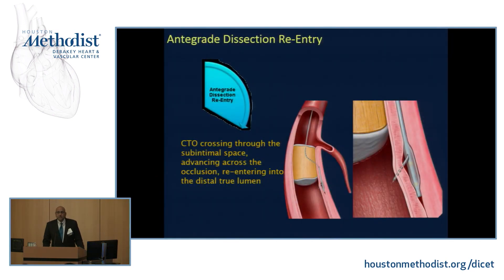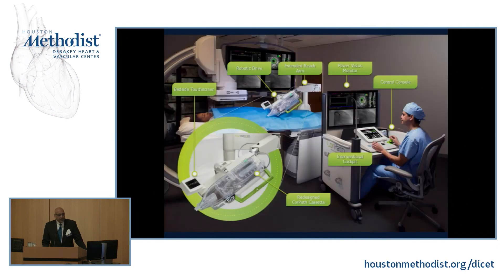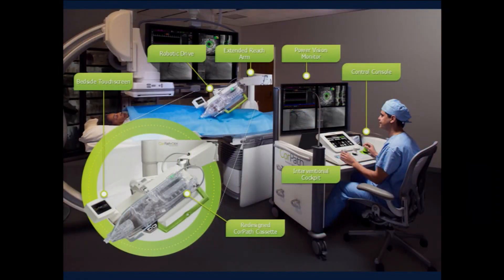For arteries that are completely blocked, we go into the vessel wall and re-enter beyond the total occlusion, push the atheroma out, and place a stent — these are CTO techniques. We can also go from the left coronary artery through the septal collaterals into the right coronary artery in a retrograde approach to cross a totally occluded artery from the other side. Here at Methodist we have also started doing robotic PCI: the operator sits at a console farther from the patient while a robotic arm drives the wires, catheters, and stents in a safe and effective manner.